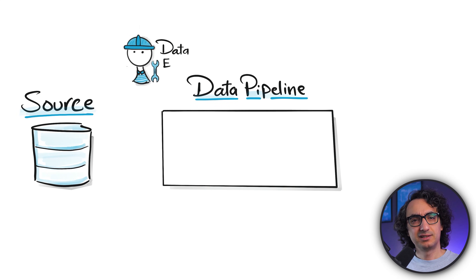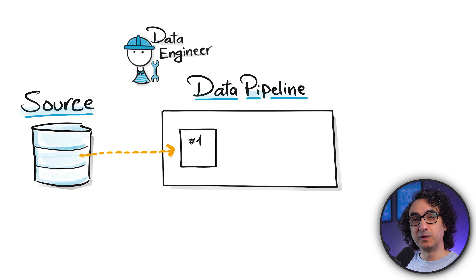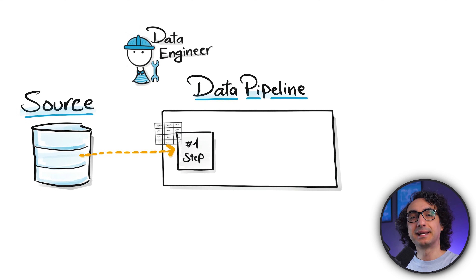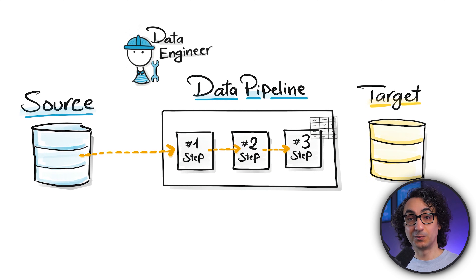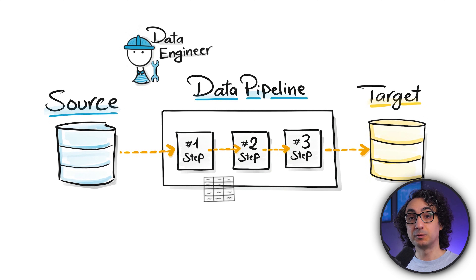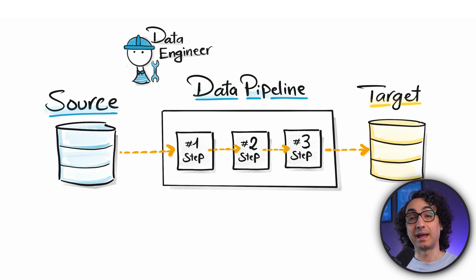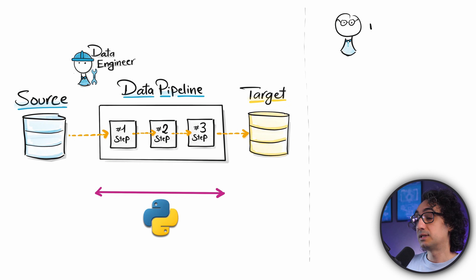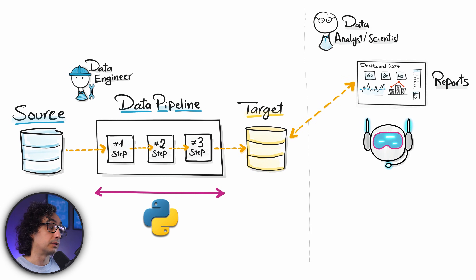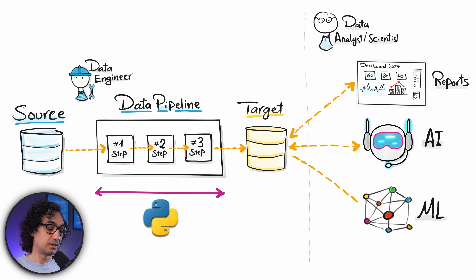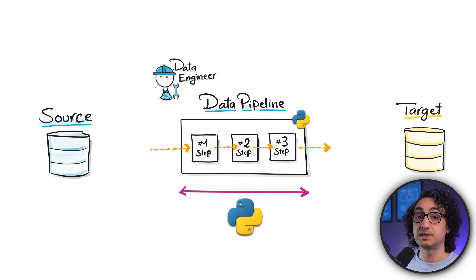At a very high level, a data pipeline is just a flow: data comes in from sources, goes through a few steps where we prepare, clean, and enhance it, and once ready we load it into the target table. It's no rocket science — as data engineers we build this pipeline using Python, and then other people use this prepared data for dashboards, AI, and machine learning.